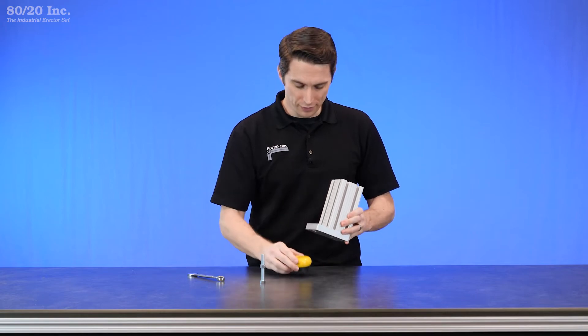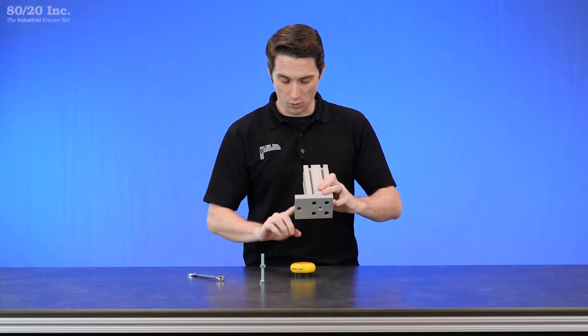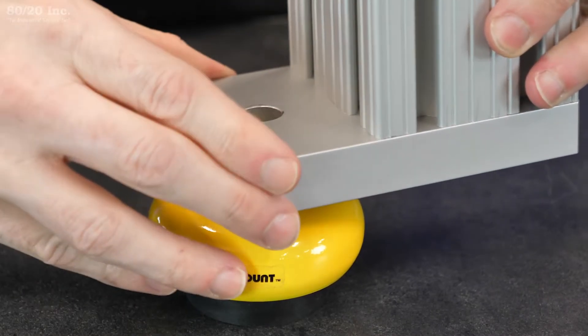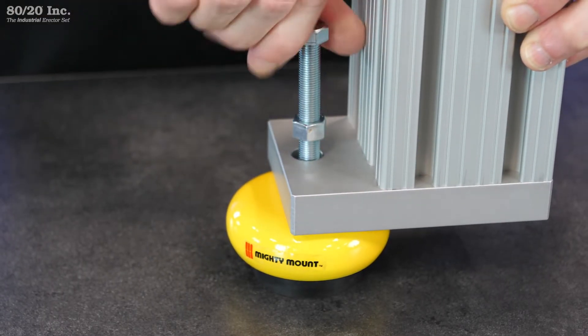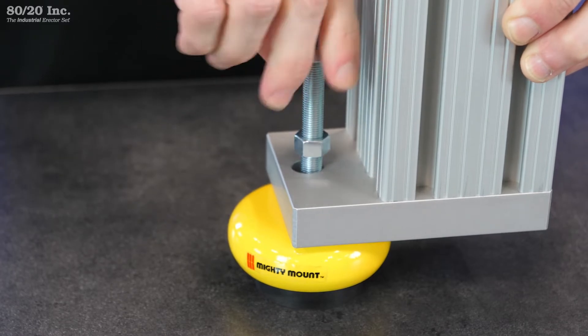Now from there, you'll take your leveling foot and line it up with the access hole on the base plate. We'll take our threaded stem and start hand tightening that into the leveling foot.